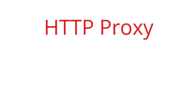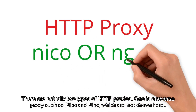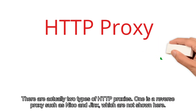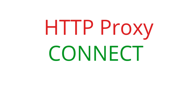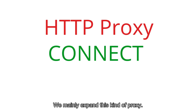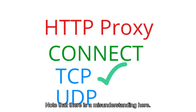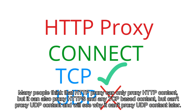Let's talk about HTTP proxies first. There are actually two types of HTTP proxies: one is a reverse proxy, such as Nginx and HAProxy, which are not discussed here. The other is a tunnel proxy, which we will mainly expand on. It can proxy any content based on TCP. Note that there is a misunderstanding here — many people think that HTTP proxy can only proxy HTTP content, but it can also proxy HTTPS and any TCP-based content, though it cannot proxy UDP content.